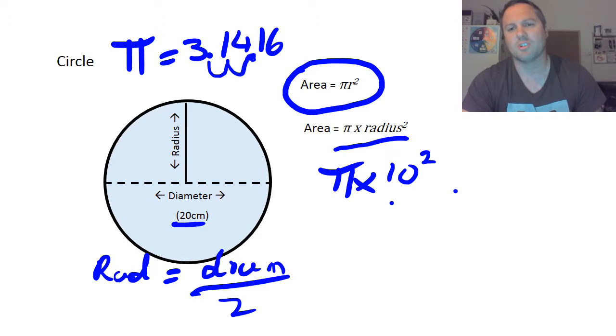So pi times 100 equals 314.16, and then we've got our centimeter squared.